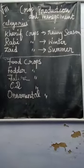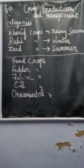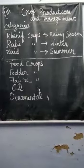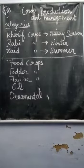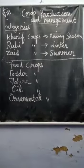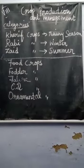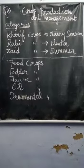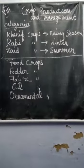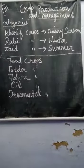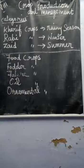Examples of Rabi crops include mustard and wheat. The third type is Zaid crops, which are sown in the summer season. Examples for Zaid crops include watermelon and cucumber. So these are the basic crop types based on season — Kharif crops, Rabi crops, and Zaid crops.